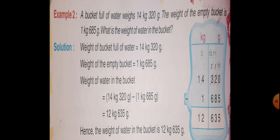Then, weight of water in the bucket, you will do subtraction 14 kg 320 g and under 14 kg write 1 kg and under 320 g write 685 g. And after subtraction, you will get 12 kg 635 g. Hence, the weight of water in the bucket is 12 kg 635 g.